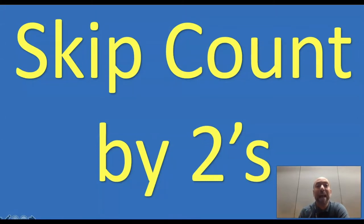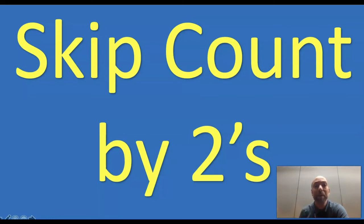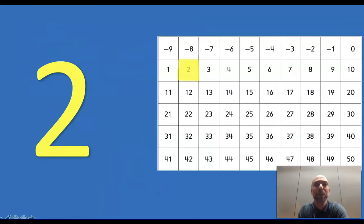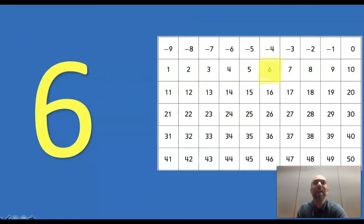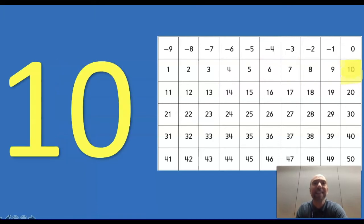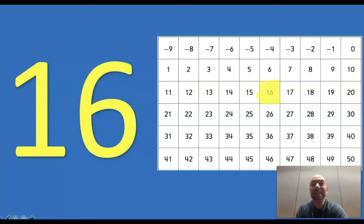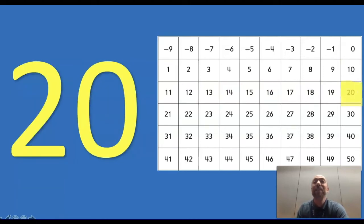Now we're going to skip count by twos. That means we're going to be saying every other number — we whisper a number then we say a number. It would go like this: one, two, four, six. Let's try and practice. Zero, two, four, six, eight, ten, twelve, fourteen, sixteen, eighteen, twenty! Awesome job!